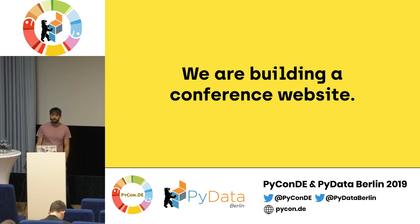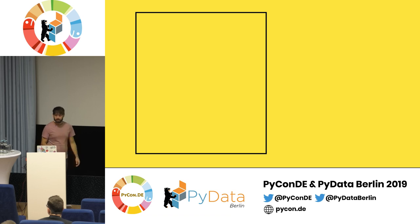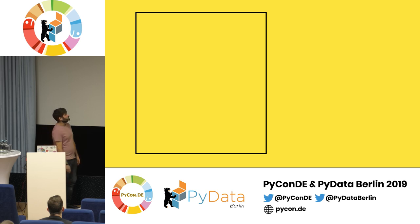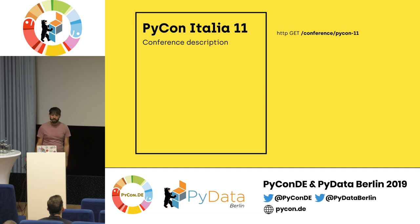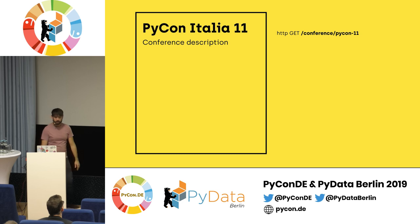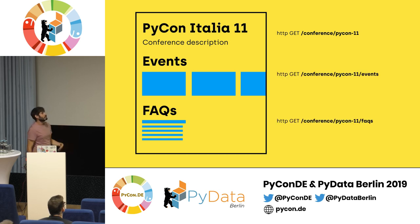Let's see an example. Let's say that we're building a conference website — it's actually a real thing that we are building now — as a static website talking with an API using JavaScript. In a proper REST API, we have different endpoints. So to fetch the conference information — the title and description — we need to call this endpoint slash conference slash packet 11, for example. But then we have a list of events and a list of FAQs, and in a proper REST API, that would mean two other requests: one to get the events and one to get the FAQs.